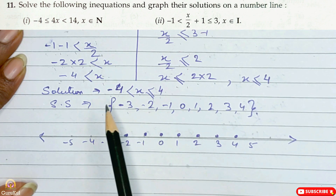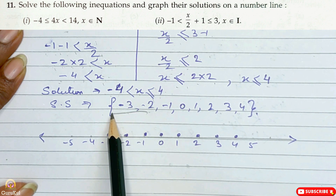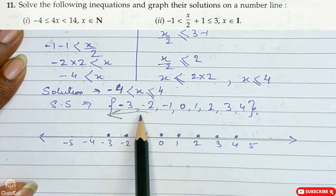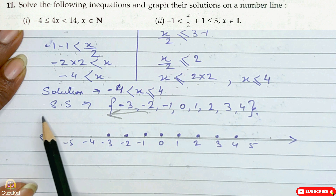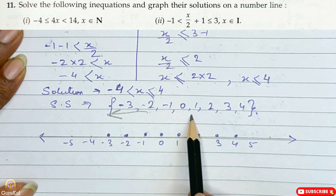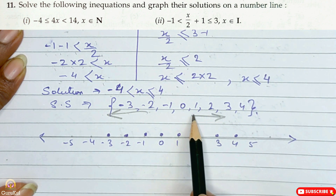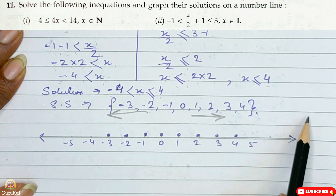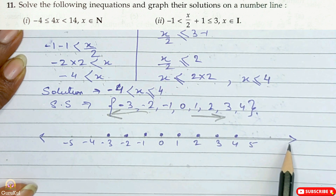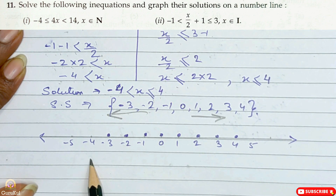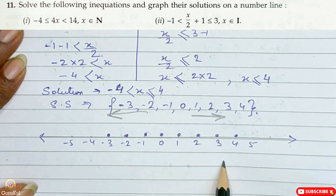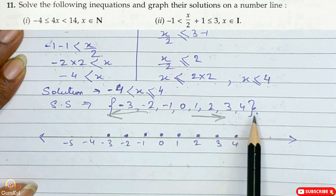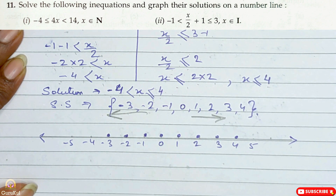Remember: as we move left on the number line with negative numbers, the value decreases; as we move right with positive numbers, the value increases. Draw the number line with positive and negative numbers and highlight all numbers in the solution set. With this we come to the end of exercise 12.3.